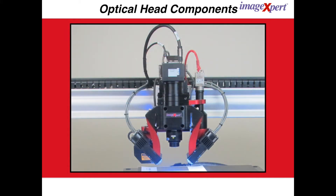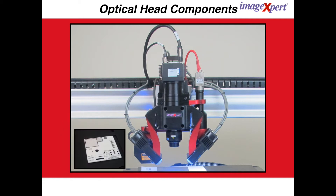All the components needed for a complete scanning system are included in the compact optical head. Two cameras are mounted side-by-side: a two-dimensional camera for barcode recognition and for finding fiducials, and a 6000 pixel line-scan camera for capturing high-resolution images of the dot pattern. Both cameras can be periodically calibrated via the embedded calibration target. The optical head also includes a laser measurement system, z-axis motion, and two light sources.